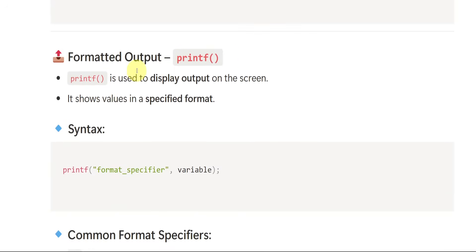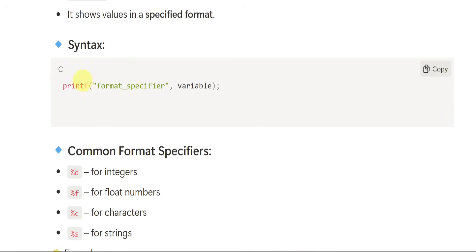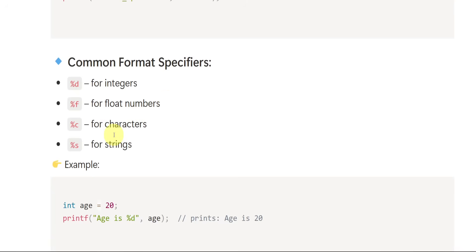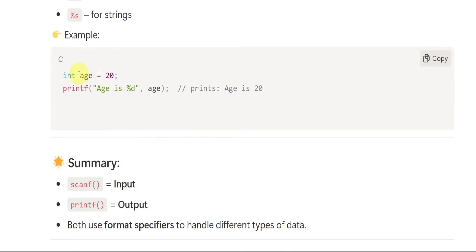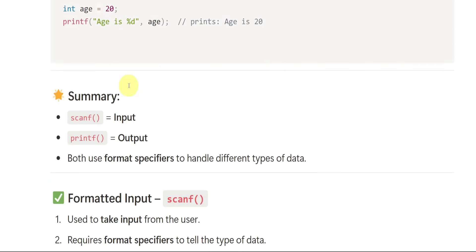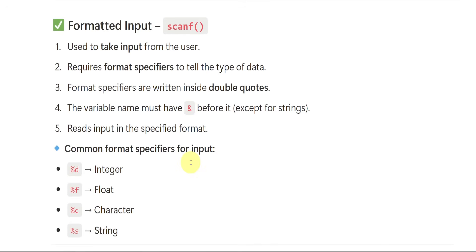Then we have formatted output: printf, which is used for displaying the output. When we want to see the output, we use printf with parentheses. The syntax is the same way as scanf, but we use printf. The common format specifiers are the same ones we saw above. For example: int age = 20; then printf("Age: %d", age); — this is the example of using printf as the output function.